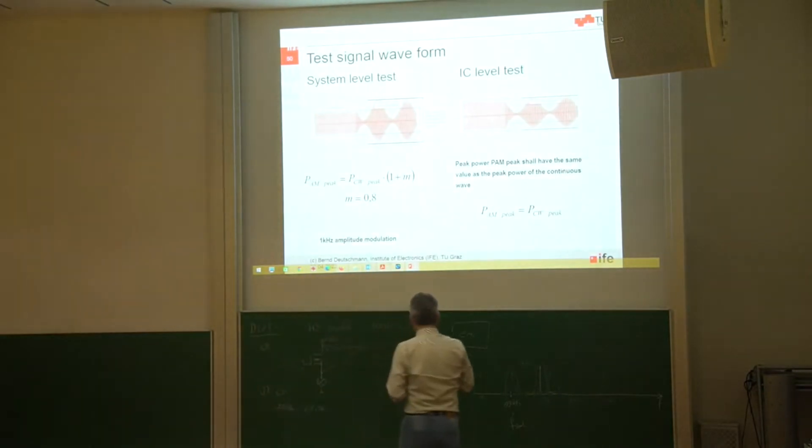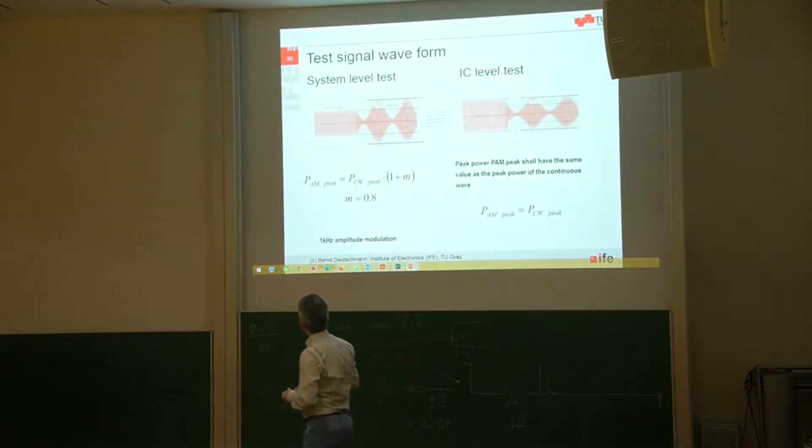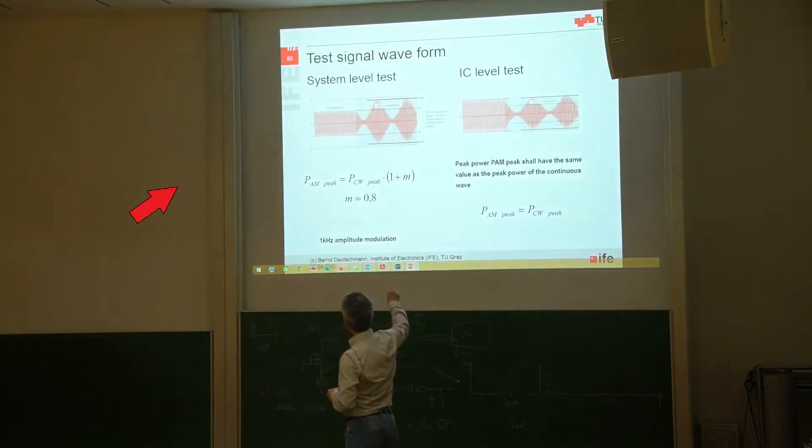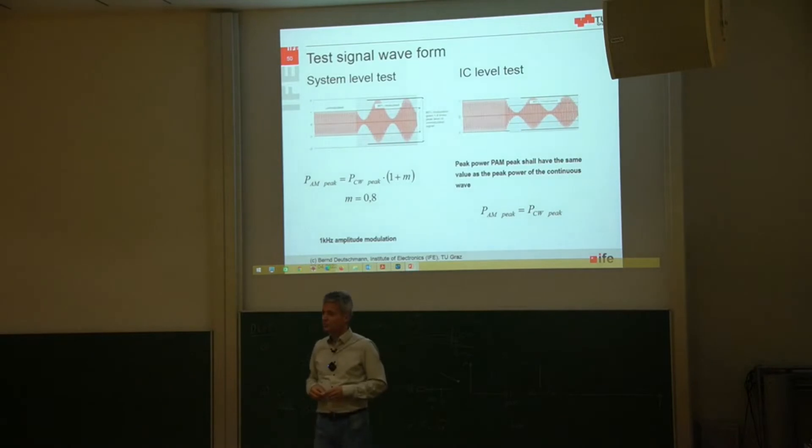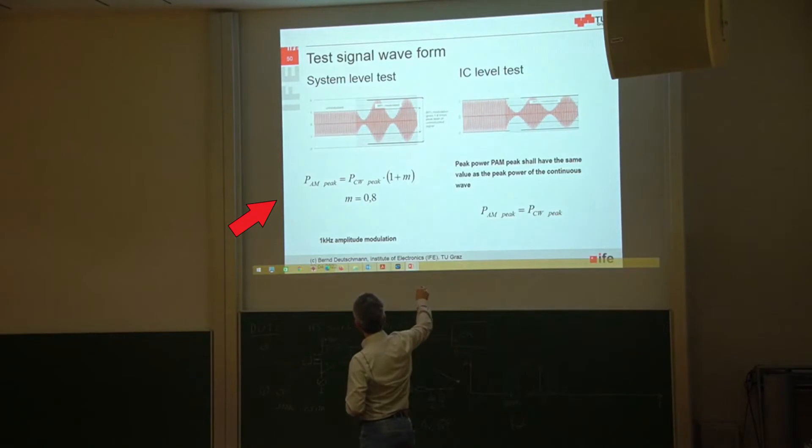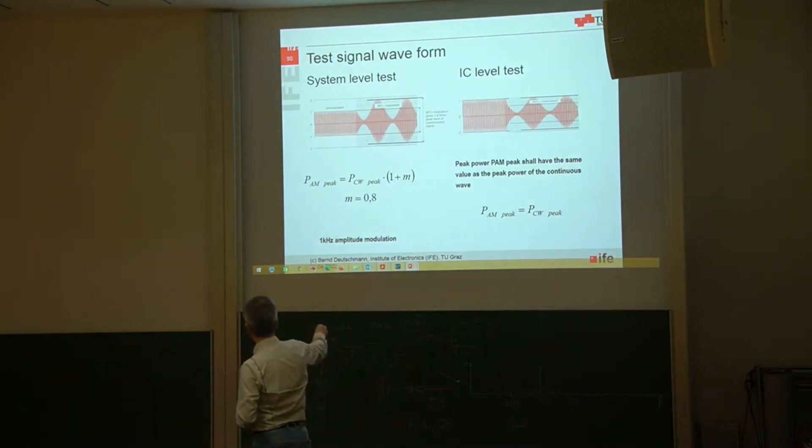At the system level when we are characterizing whole systems like cars or laptops, very often we are using this unmodulated continuous wave signal and then we are modulating by an amplitude modulation with 80% modulation. The final disturbance signal looks like this, so it's modulated by a low frequency signal, and very often the low frequency signal is one kilohertz.